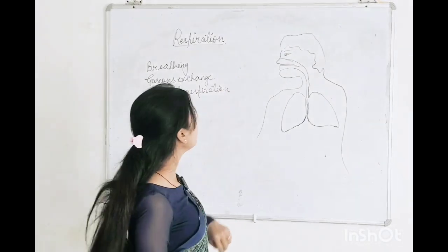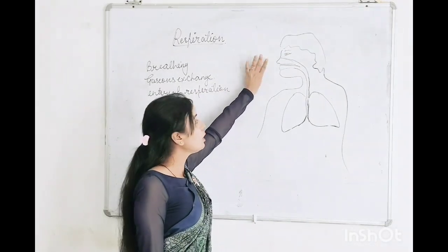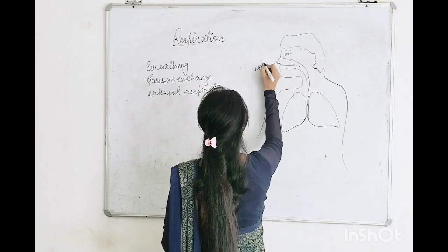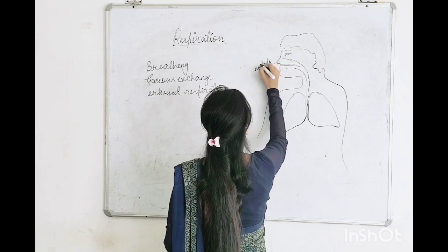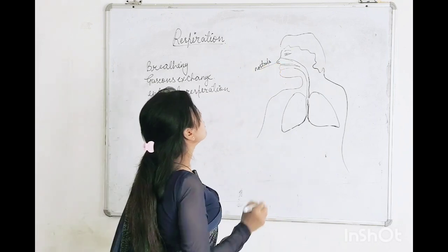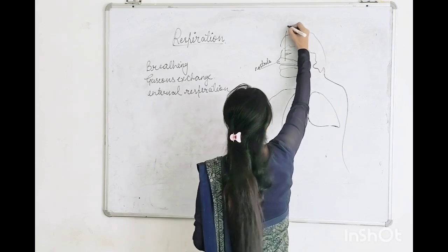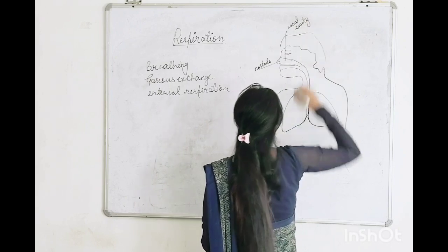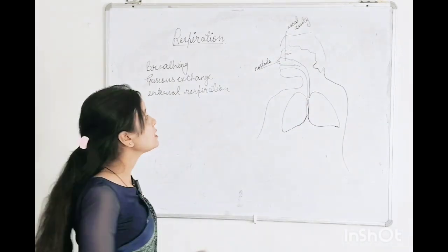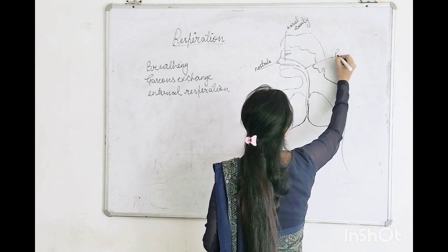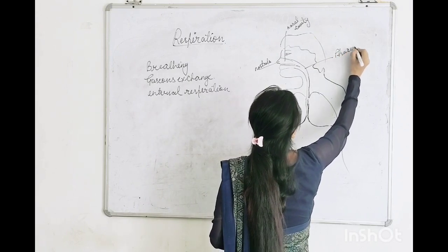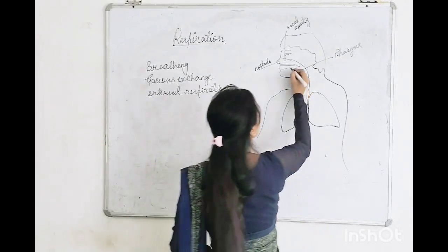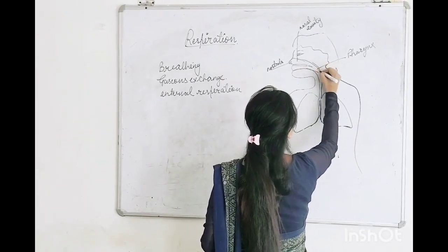The air enters the human body through the nostrils — these two holes called nostrils — which then passes into the nasal cavity. From here, this air passes into the pharynx, which is the common passage for food and air.